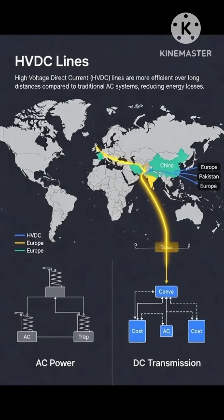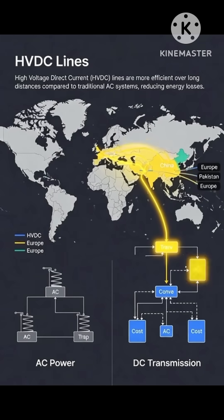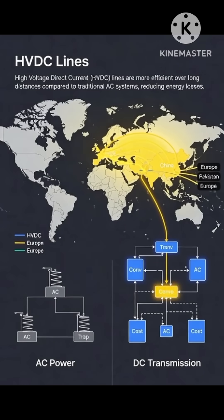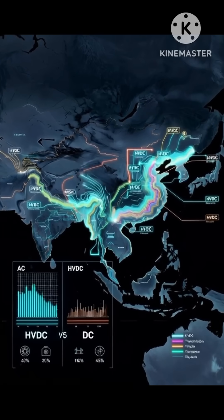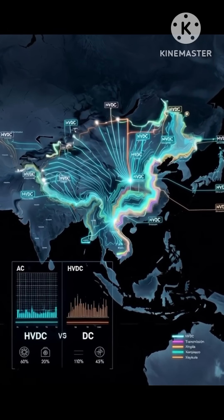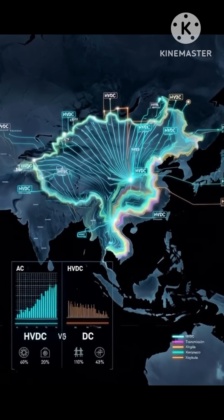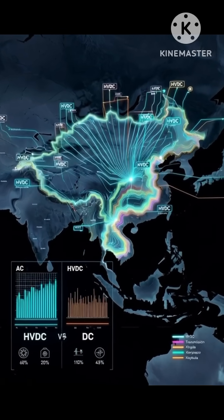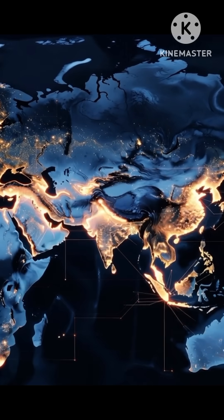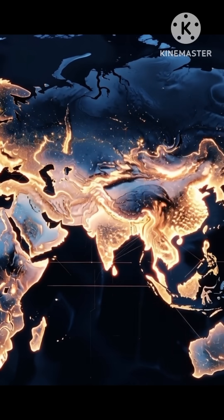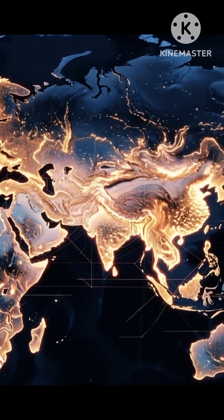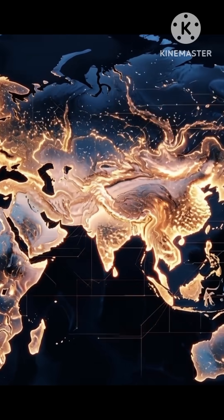Modern grids are now combining both — AC for distribution and DC for high-capacity transmission. This hybrid system is the backbone of smart grids and renewable energy integration.